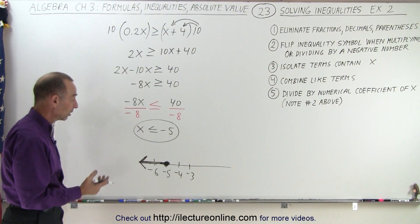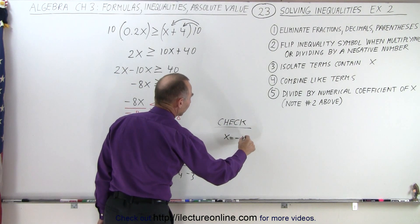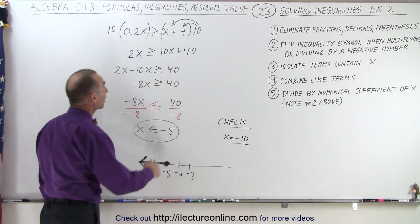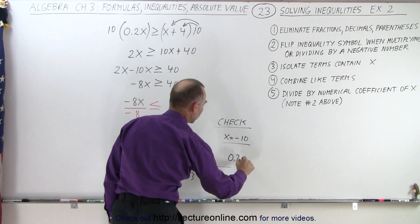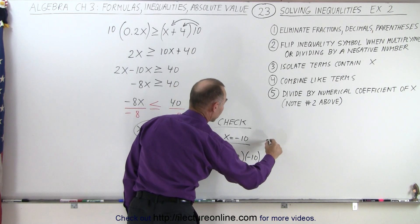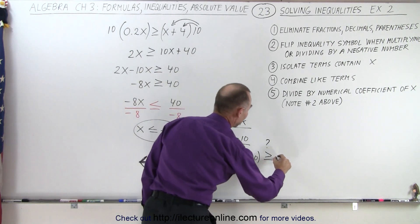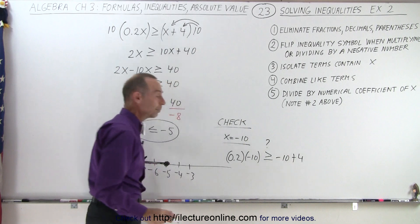If you want to make sure that this is correct, you can do a quick check. Let's pick the point x equals negative 10, which should be part of the solution. Let's plug it in here. So we have 0.2 multiplied times negative 10. Is that greater than or equal to, question mark, negative 10 plus 4? So that's what it comes down to.